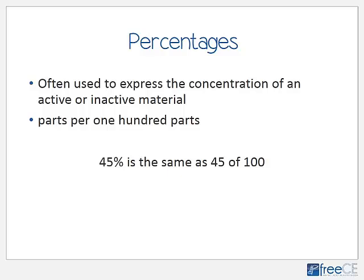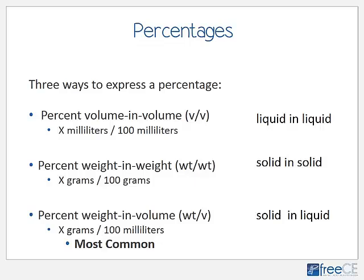Percentages are often used to express the concentration of an active or inactive material — defined as parts per 100 parts. So 45% is the same as 45 parts out of 100. When talking about medicine, there are three ways to express a percentage: percent volume-in-volume (liquid in liquid: mL per 100 mL), percent weight-in-weight (solid in solid: grams per 100 grams), and percent weight-in-volume (solid in liquid: grams per 100 mL).